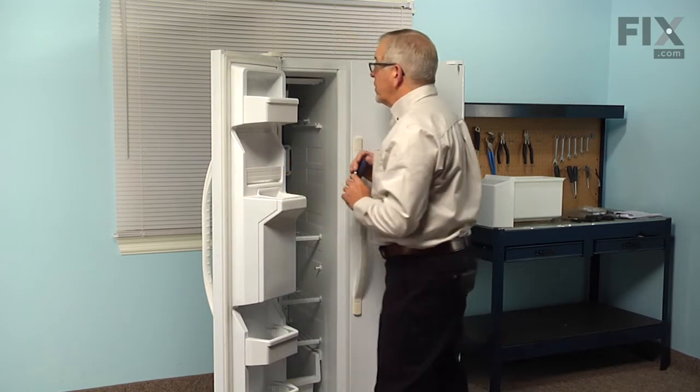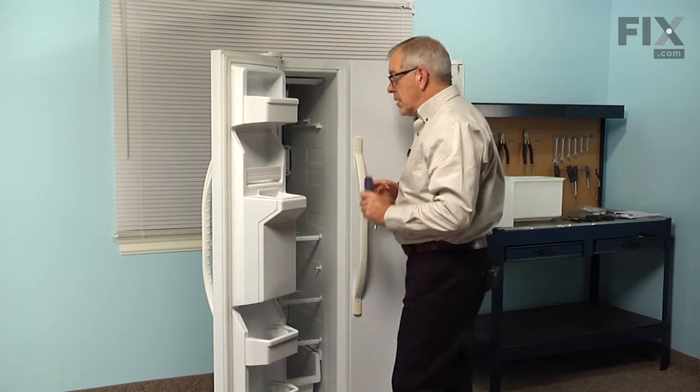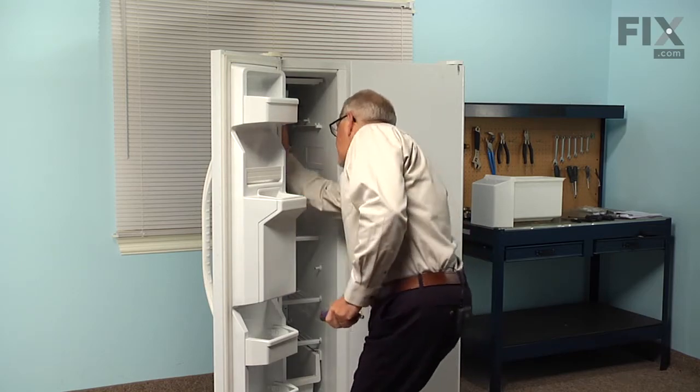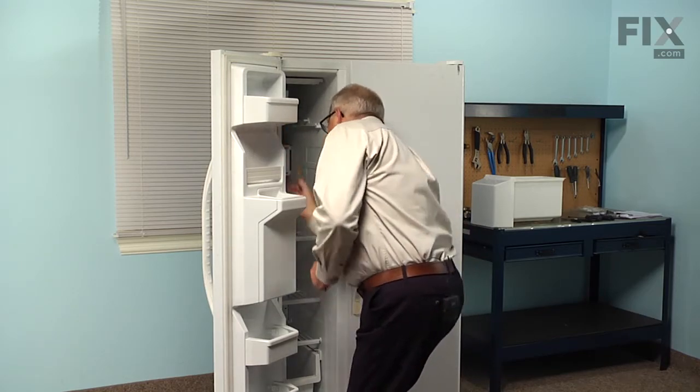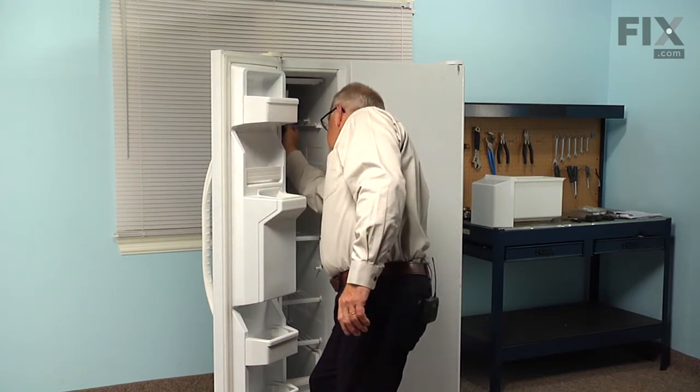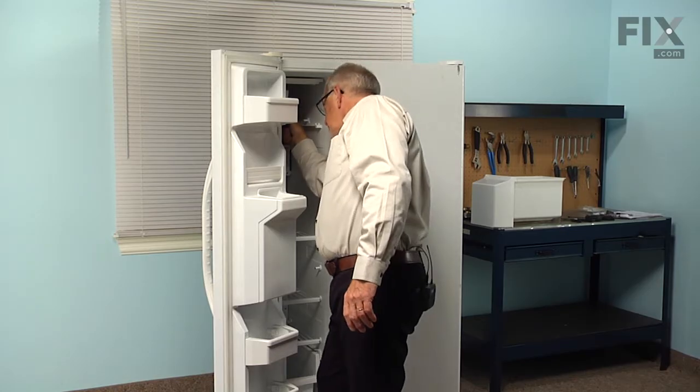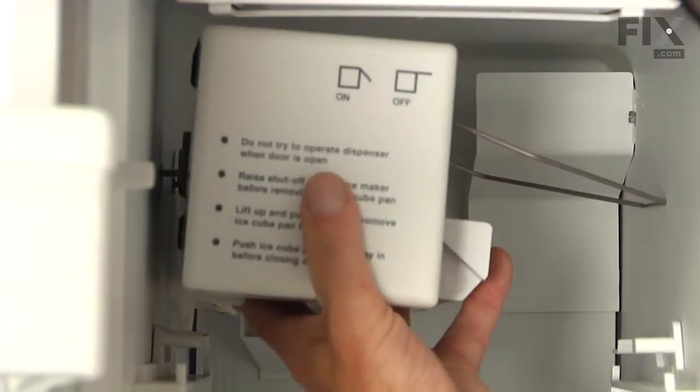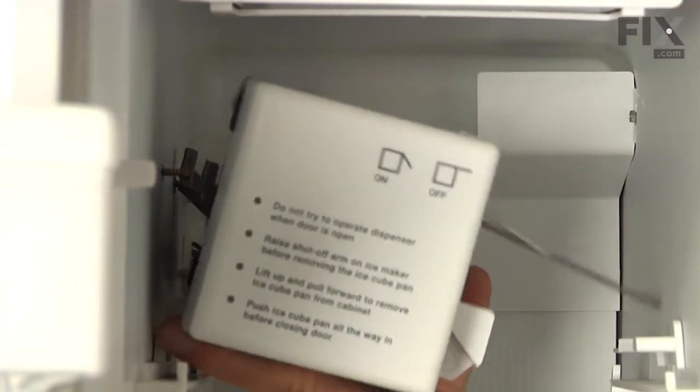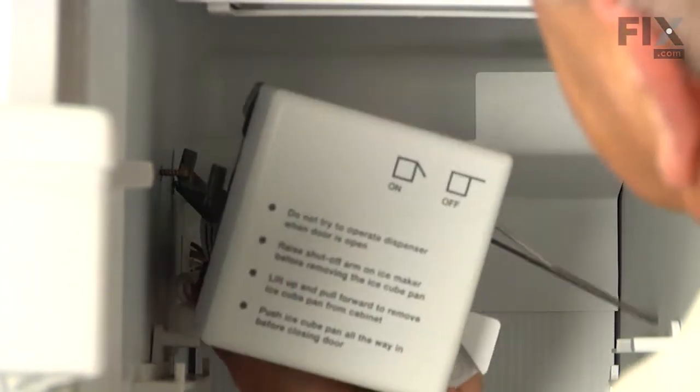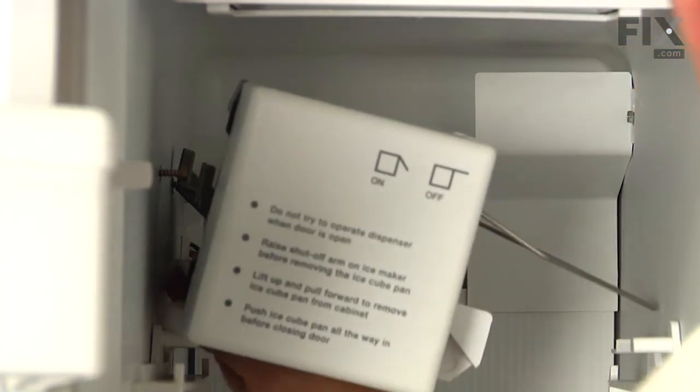Now once we've loosened the two top screws, your model may also have a mounting screw on the bottom with a bracket attached to it, so determine that first and if it does have that bracket, you'll need to completely remove that screw. Then we can lift the ice maker off of those two top mounting screws and tilt it down.